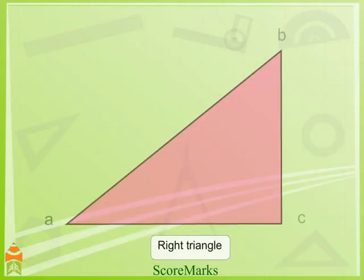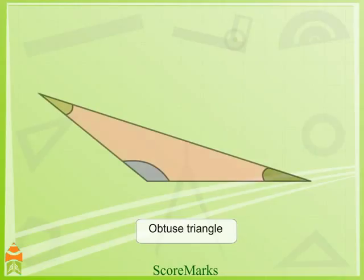Right triangle: one of the angles of right triangle is 90 degrees. Obtuse triangle: one of the angles of obtuse triangle is more than 90 degrees.